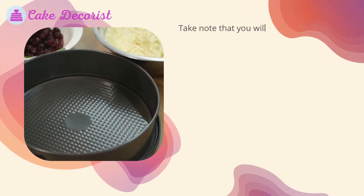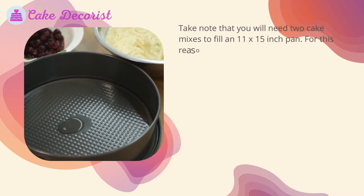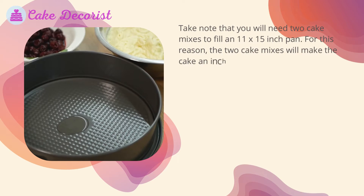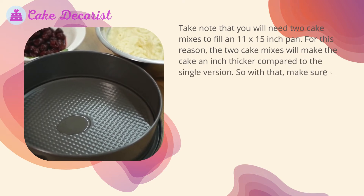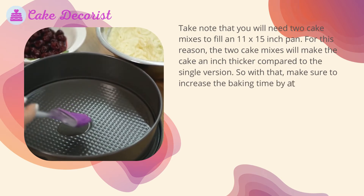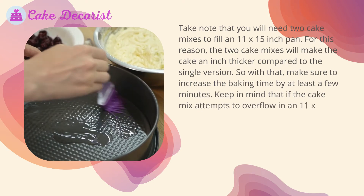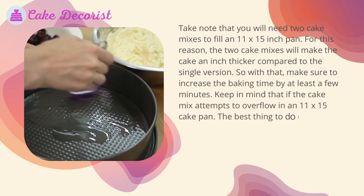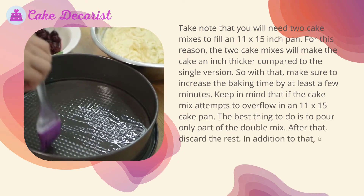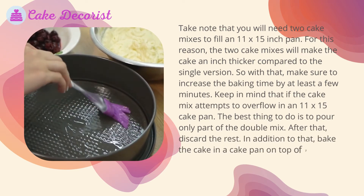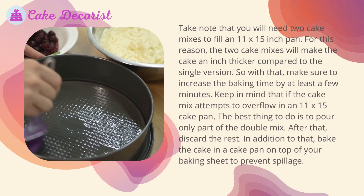You will need two cake mixes to fill an 11 by 15 inch pan. The two cake mixes will make the cake an inch thicker compared to the single version, so make sure to increase the baking time by at least a few minutes. If the cake mix attempts to overflow, pour only part of the double mix and discard the rest. Also, bake the cake on top of a baking sheet to prevent spillage.